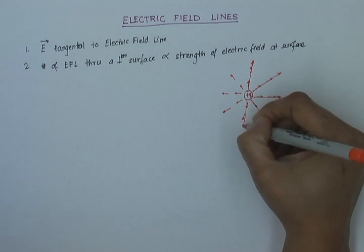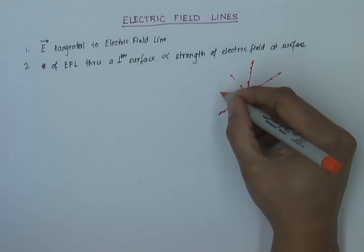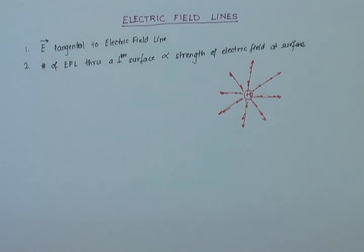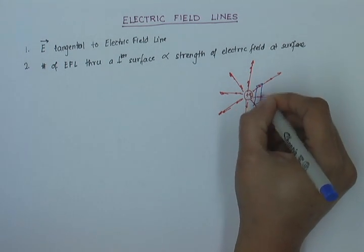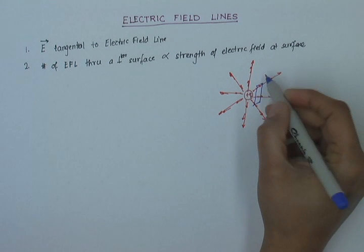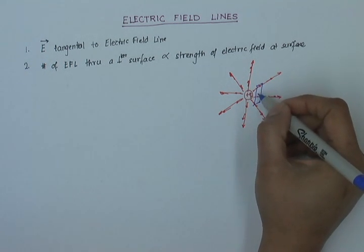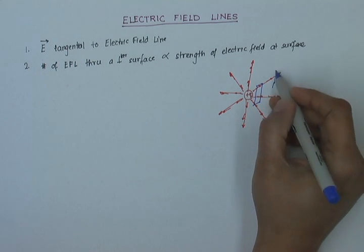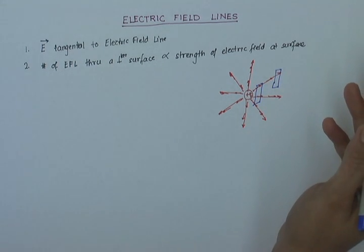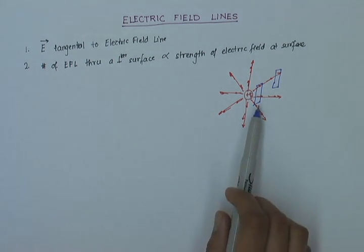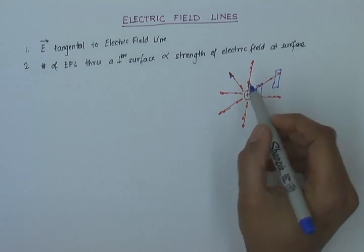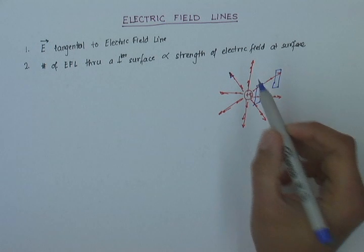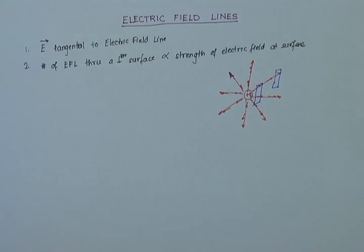These are my electric field lines. If I draw a surface perpendicular to the electric field lines, we can see that more lines pass through the surface when it is closer to Q, whereas fewer lines pass through the same surface as it moves away from Q. This is a good representation showing both the direction — acting away from the positive charge — and the magnitude as we move away from positive Q.